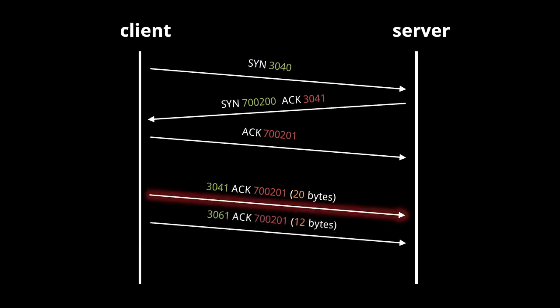In a scenario where the client sends two segments of data but the first doesn't reach the server: because the server has bytes starting at sequence number 3061, but not bytes 3041 to 3060, any acknowledgement the server sends will still have 3041 as the acknowledgement number. After a short time, the client will decide it needs to resend everything starting from sequence number 3041. Notice some inefficiency here — if TCP acknowledgements were more specific about what bytes have been received, the client would only need to resend those. In most cases, however, TCP's cruder system of sequence and acknowledgement numbers suffices without imposing much overhead.